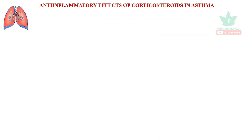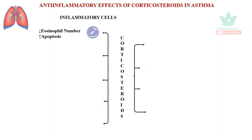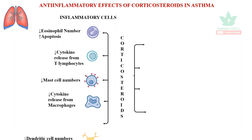Regarding the anti-inflammatory activity of corticosteroids: they reduce inflammation by decreasing eosinophil numbers and increasing apoptosis of eosinophils. They decrease cytokine release from T-lymphocytes, decrease mast cell activity as well as mast cell numbers, decrease cytokine release from macrophages, and also decrease dendritic cell numbers, which are antigen-presenting cells.